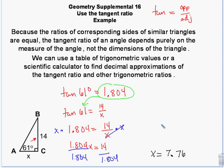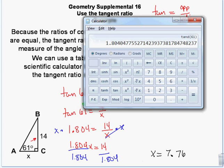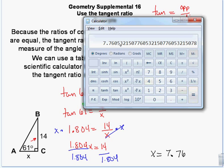This answer is probably not completely accurate because I rounded the tangent. Without rounding, I get 7.7603 versus 7.76 — it's really close, so don't worry about that small difference.